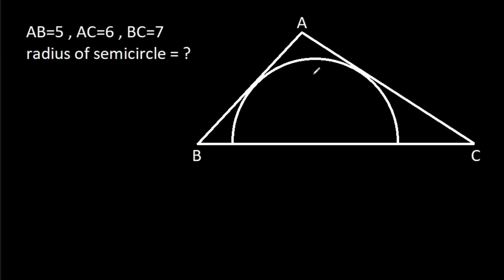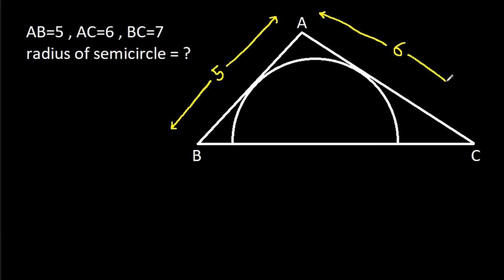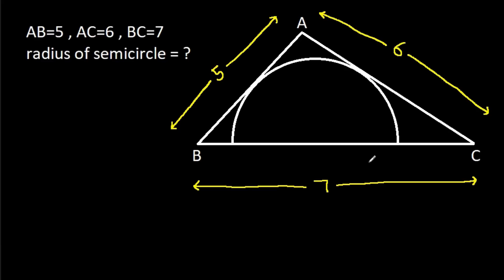In this video, we have been given a semicircle inside a triangle where AB is 5, AC is 6, and BC is 7. We have to find the radius of the semicircle.